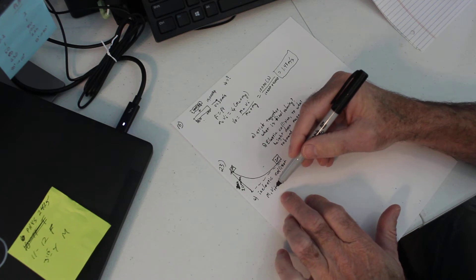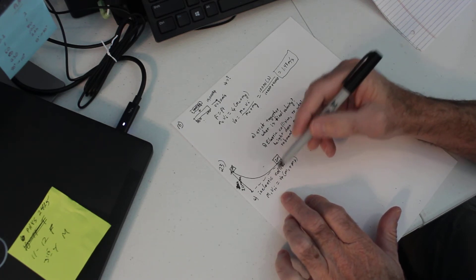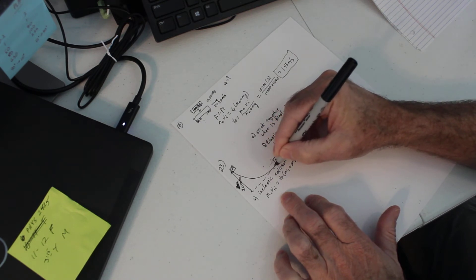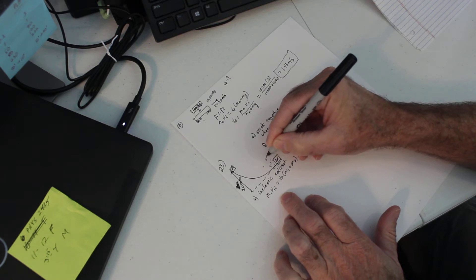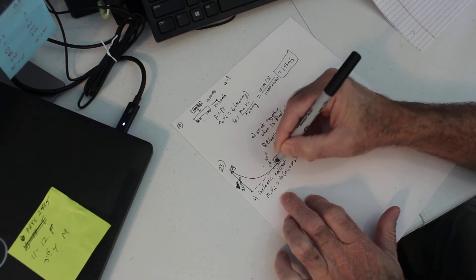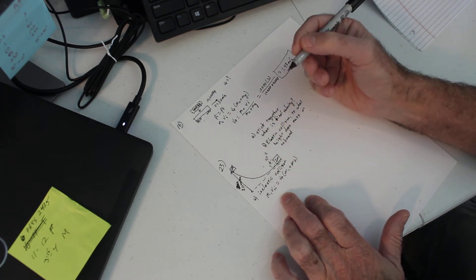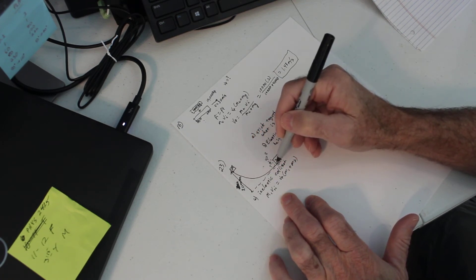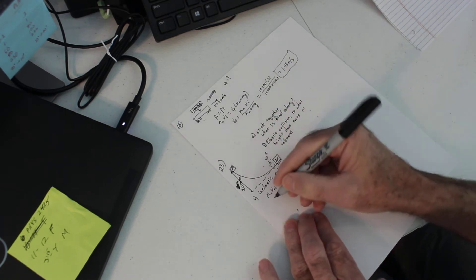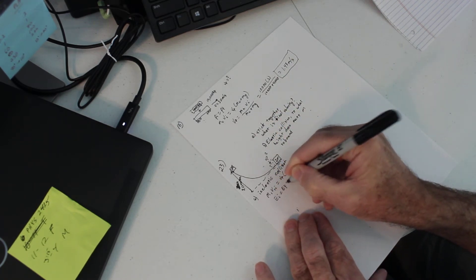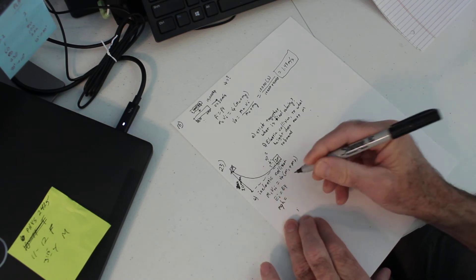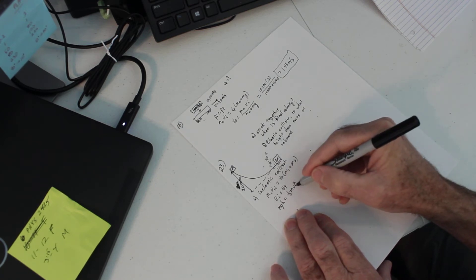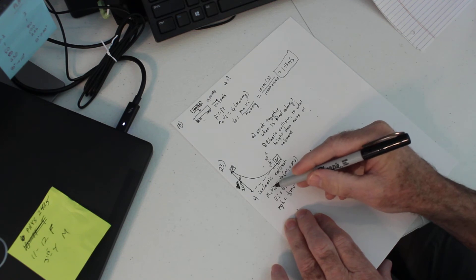However, we're not given the initial velocity. The initial velocity has to be the velocity right before the collision — right when the block comes down, right before it collides. We need to know what its velocity is at that point. We know from energy conservation that if the block is sliding down a ramp, energy is conserved right before the collision. So let's do this as an energy problem.